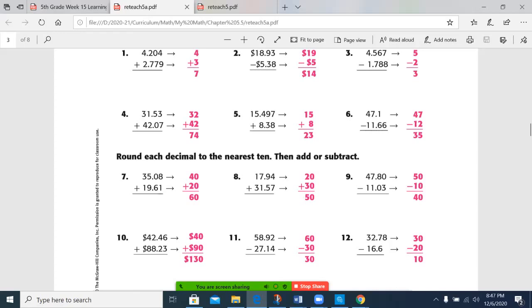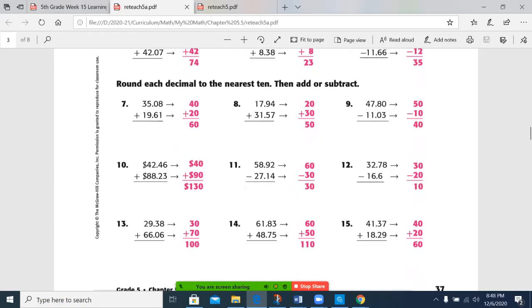Notice that we had a different number of digits. This one only went to the tenths, this one went to the hundredths. It didn't matter for what we were doing today. If this was actually adding or subtracting these, I would have added a zero there to make sure you have the same number of digits.